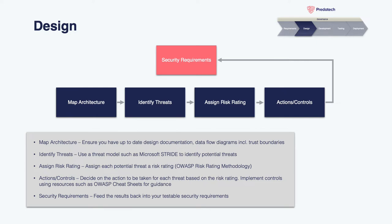Once you have all design documentation mapped out, start identifying potential threats using a threat model such as STRIDE. Assign each threat a risk rating or severity, then decide what action to take. Will you implement controls to reduce the risk, or is the risk so low and the cost to mitigate so high that you're willing to accept it? Feed all your findings back into the security requirements so that controls to be implemented are converted into tickets and not missed when functionality is verified later. There will be massive crossover between the requirements and design stages — it's going to be completely fluid practice.